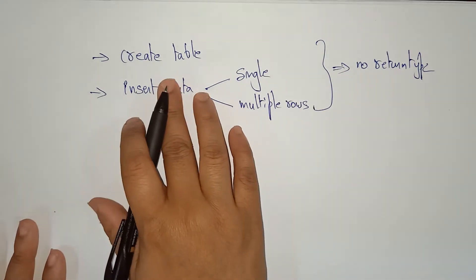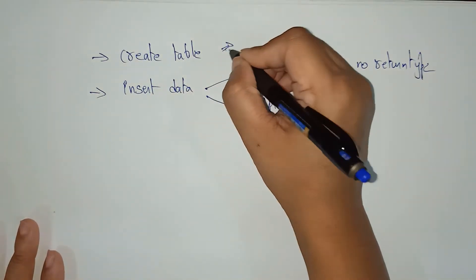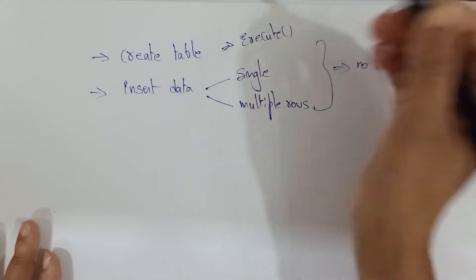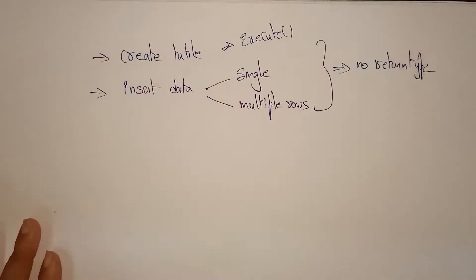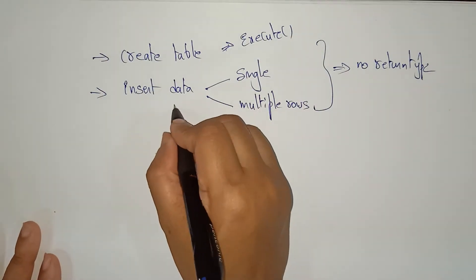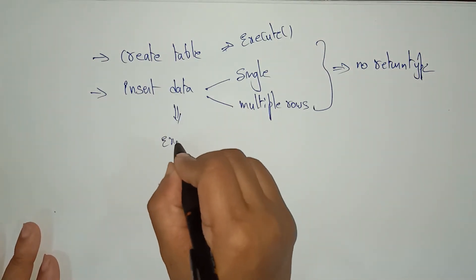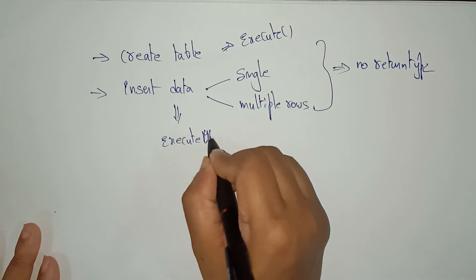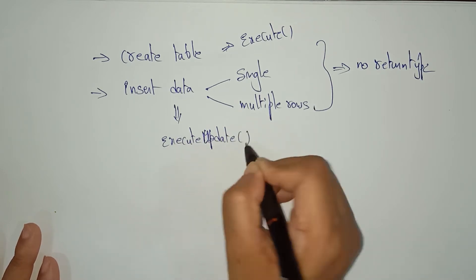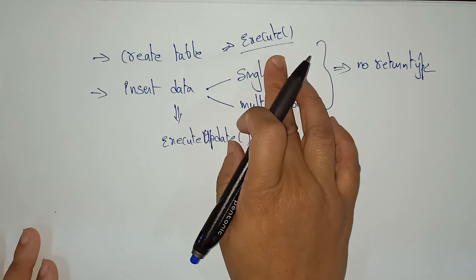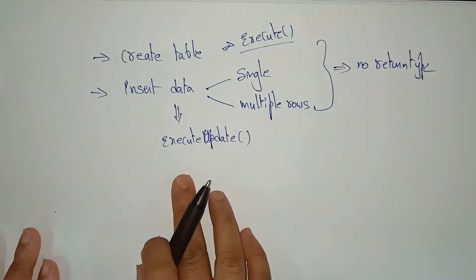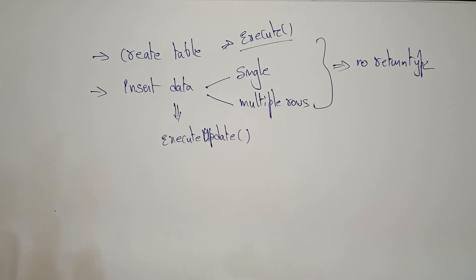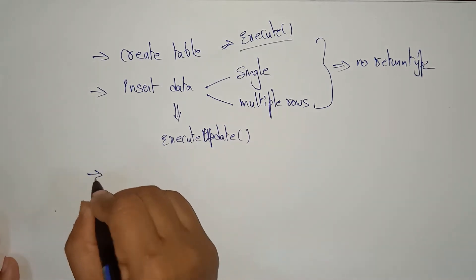For creating a table we used the command execute(). For inserting data, the command we used was executeUpdate(). So for creating a table we called execute(), and for inserting data we used executeUpdate().